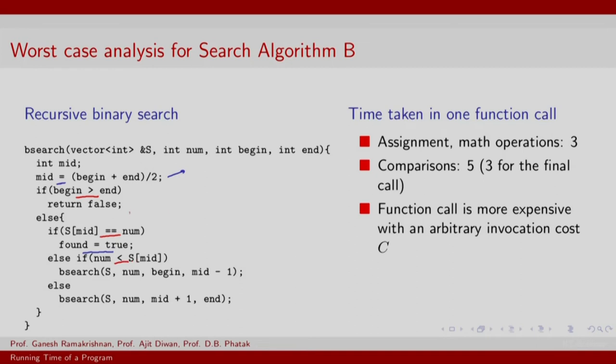In fact, two of these comparisons will invoke cost of two each. That is because they also require you to compute the element at a particular location in the sequence. So there is basically array access or sequence access. So overall there is comparison of five.